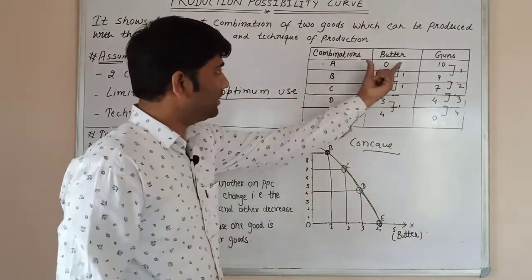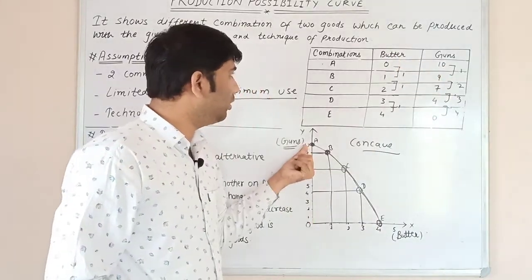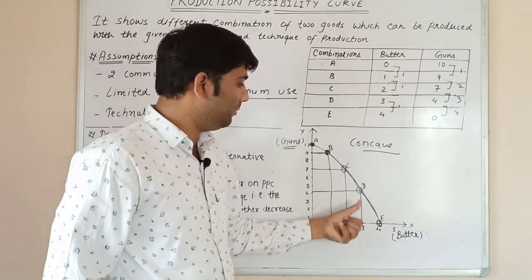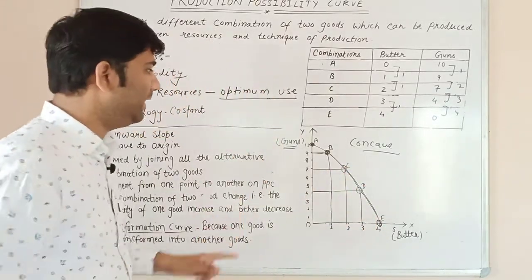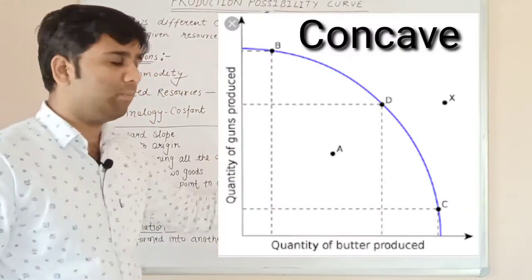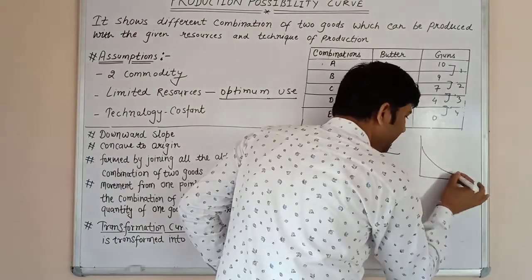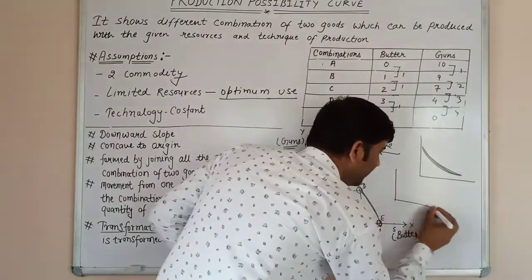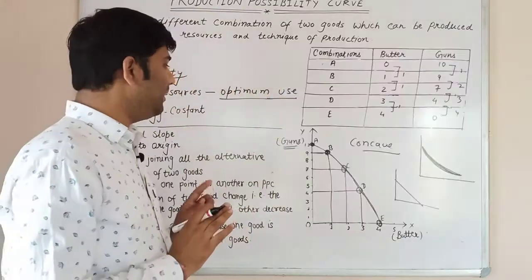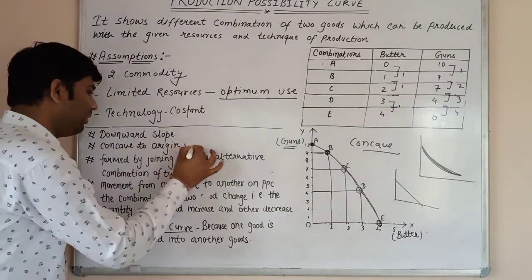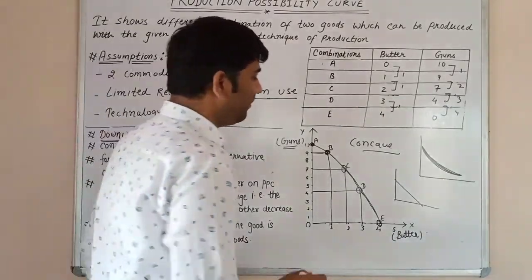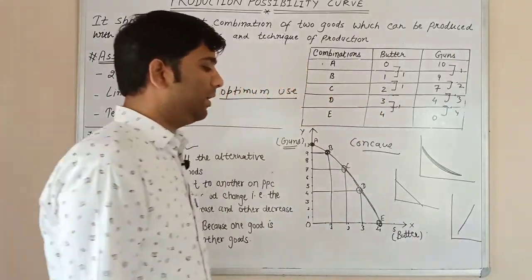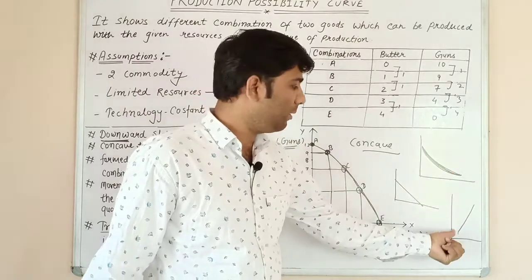On the graph, good X (butter) is on the x-axis and guns (Y) are on the y-axis. When we plot the first data point: 0 and 10 gives combination A; 1 and 9 gives combination B; similarly combination C, D, and E. Joining all these gives the PPC curve. Its shape is concave — not convex or straight. PPC is always downward sloping, meaning it goes from top to bottom.